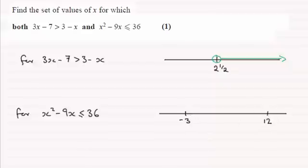And because we had an equality here, an equal sign, then we could include the values of minus 3 and 12. And so this can be shown on a number line, something like that.